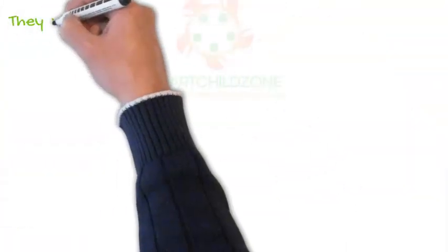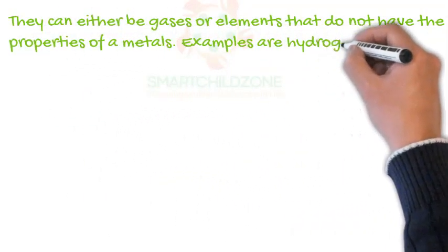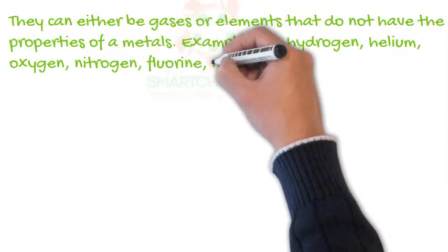They can either be gases or elements that do not have the properties of metals. Examples are hydrogen, helium, oxygen, nitrogen, fluorine, neon, sulfur, phosphorus, etc.